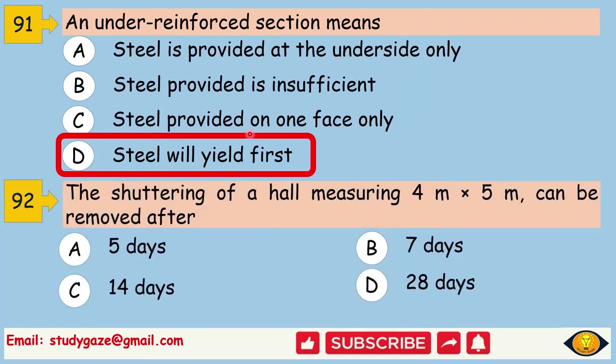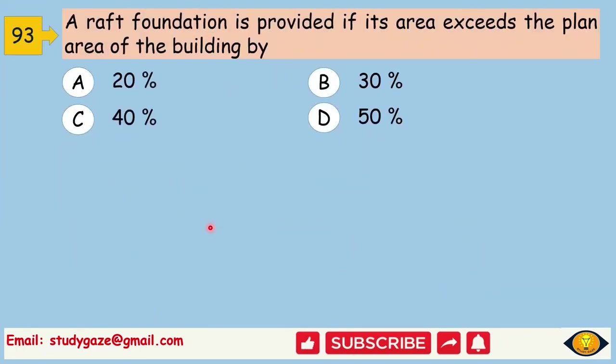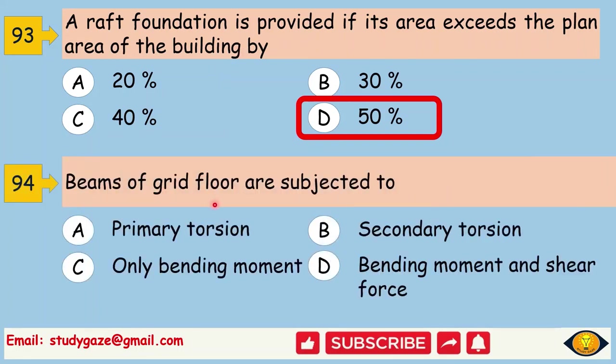The shuttering of a hole measuring 4m by 5m can be removed after 7 days. A raft foundation is provided if its area exceeds the plan area of the building by 50%. Beams of grid floor are subjected to. Answer is secondary torsion.